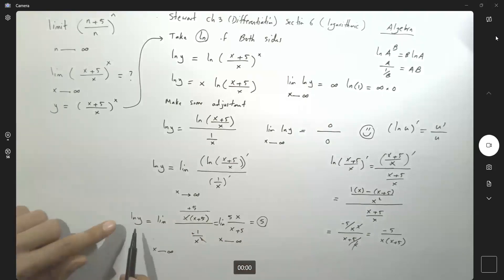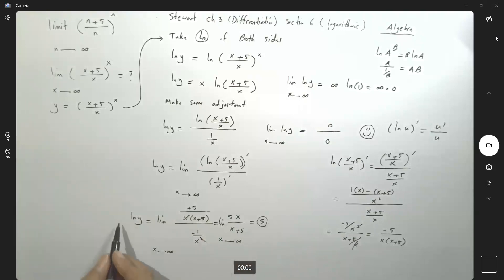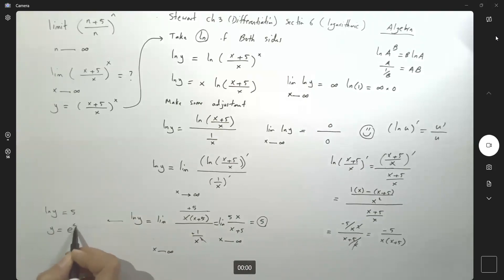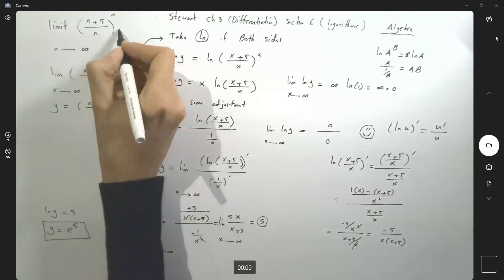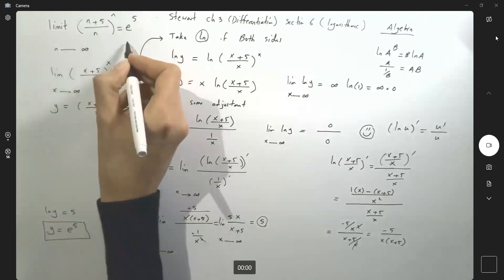So the limit of ln y as x approaches infinity is 5. Since ln of y equals 5, y equals e to the power 5. The limit of this sequence is e to the power 5.